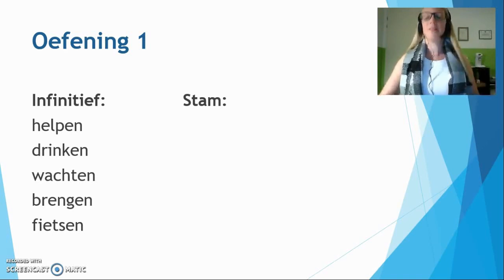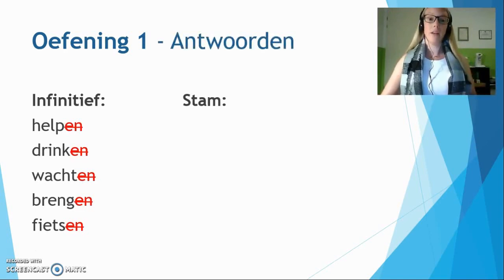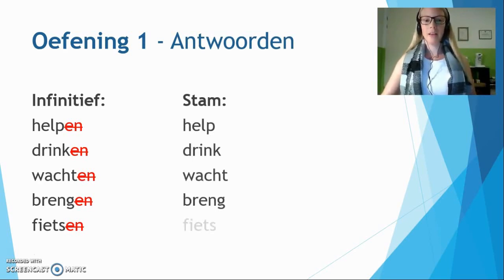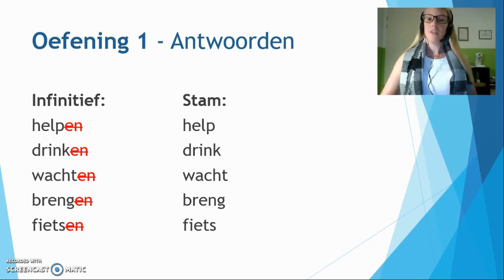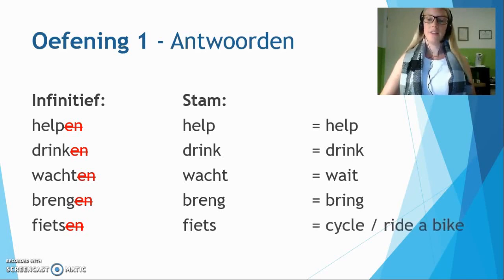Alright, are you done? Ready for the answers? Well, first thing we do is remove -en from all the verbs — just take it out — and what we are left with is called the stam: help, drink, wacht, breng, fiets. Just in case you are curious to know the meaning: ik help — I help; ik drink — I drink; ik wacht — I wait; ik breng — I bring; ik fiets — I cycle, or I ride a bike.